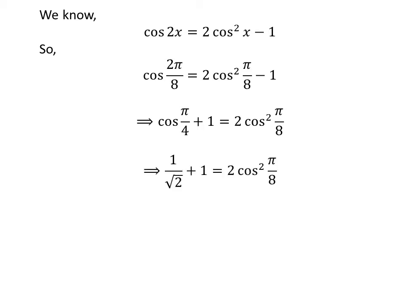We know the value of cos(π/4) is 1/√2. So, 1/√2 + 1 = 2cos²(π/8).